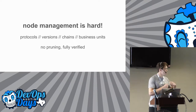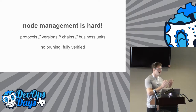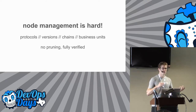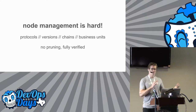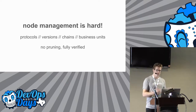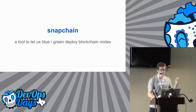Another complicating factor: a lot of people using nodes on their desktop will prune them and run nodes that haven't actually verified the whole blockchain all the way back. That's not a concession we're willing to make — all our nodes are going to be fully verified.